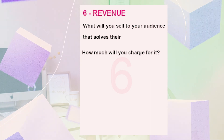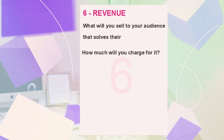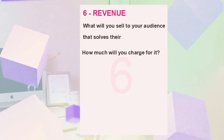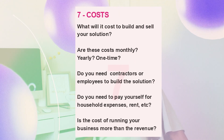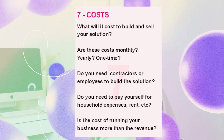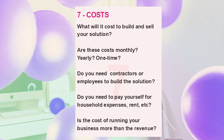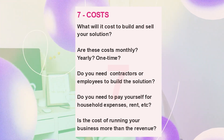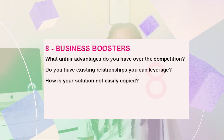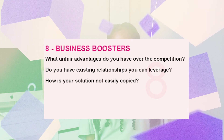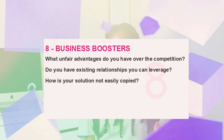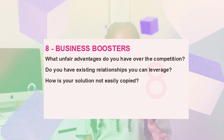Number six is revenue — how much will you charge for your service or product? Number seven is cost — how much will it cost for you to offer this service or product to your customer? Number eight is business boosters — what unfair advantage do you have over your competitors?